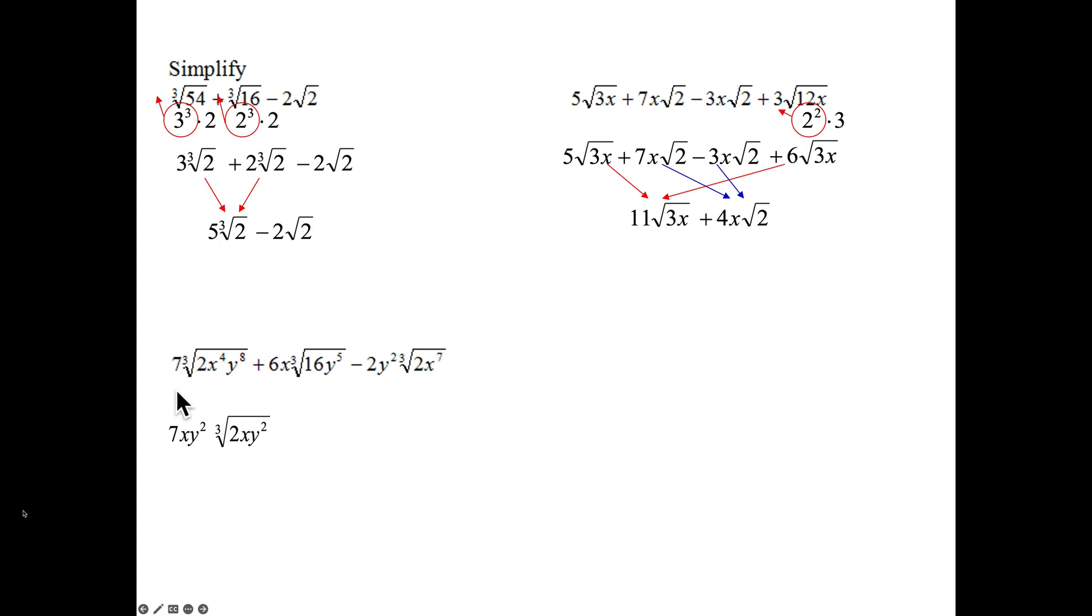Next example, holy cow, a lot of things to simplify here. So breaking down the first one, cube root is integral. 3 goes into 4 once with 1x left over. 3 goes into 8 twice with 2 left over. So this is my left over on that cube root. The next term, 6x. Okay, we can break down the 16 as 2 to the 4th. And then we have y to the 5th. So we're going to be able to take out a 2, because that's 8 times 2. The cube root of 8 is 2 times the 6, 12. 3 goes into 5 once with the y, with the y squared left over.